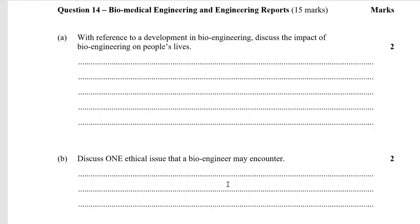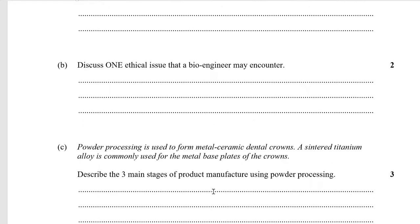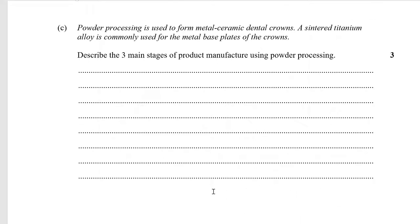Bioengineering — discuss the impact of bioengineering in people's lives: improved quality of life, improved lifespan, ability to return to the workforce. Discuss one ethical issue — the one students tend to overwhelmingly write about is cochlear implants, but the real one you should write about is animal testing. Some people don't like the idea of playing god, some people don't like organs being replaced, and some don't like the use of nuclear technologies.